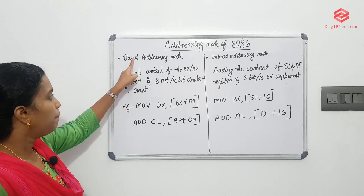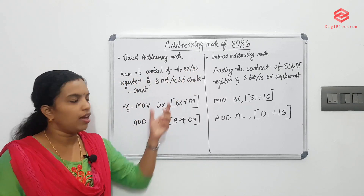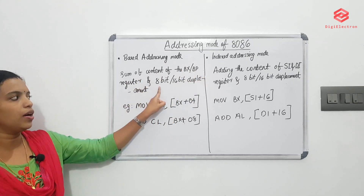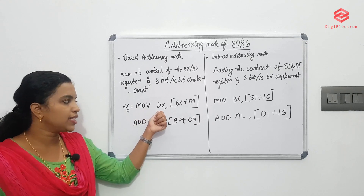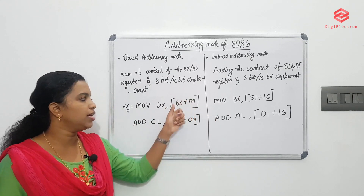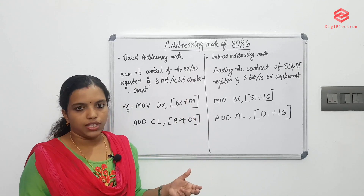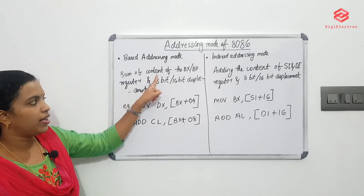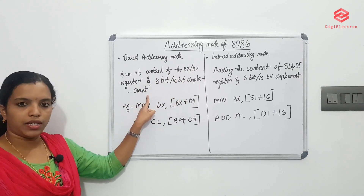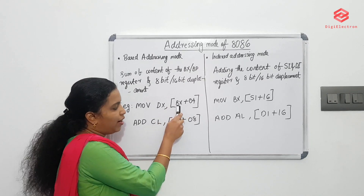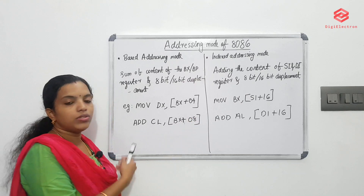The fifth one is based addressing mode. In based addressing mode, you use BX or BP registers plus an 8-bit or 16-bit displacement. For example, MOV DX, [BX + 04H]. The effective address is the sum of the content of the BX or BP register and an 8-bit or 16-bit displacement.